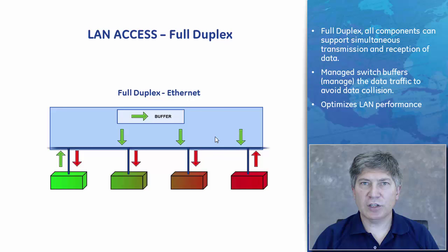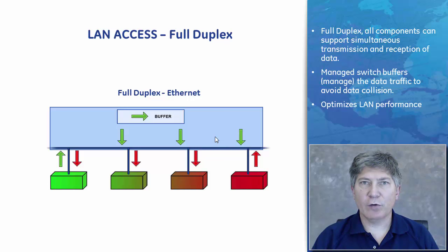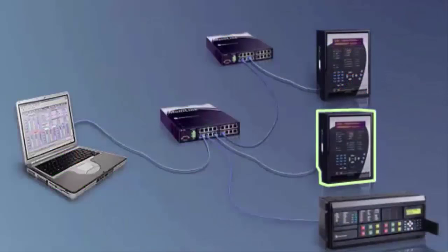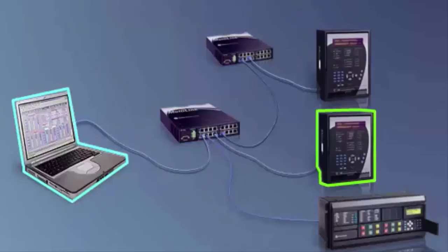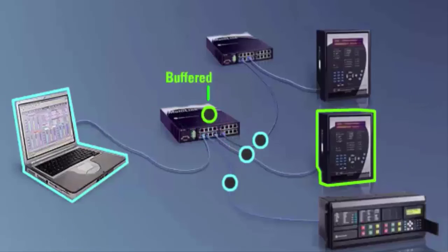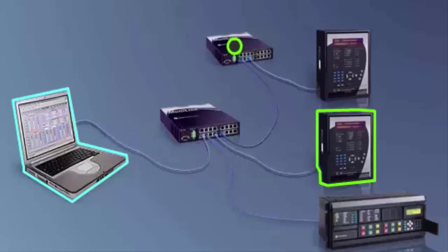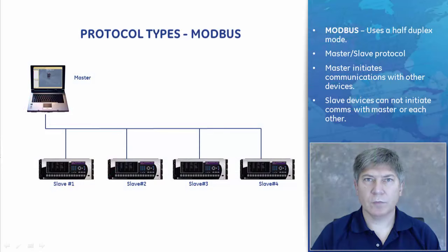Today, collisions have mostly been eliminated because shared Ethernet gave way to full-duplex point-to-point communication between sender and receiver. In full-duplex, all components can simultaneously transmit and receive data. The managed switch buffers data traffic to avoid data collision, optimizing LAN performance. For example, if the blue and green devices transmit at the same time, one message is buffered at the switch while the other is passed through. Once the blue message has been transmitted, the switch will send the green signal automatically.